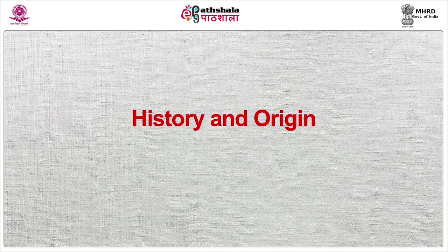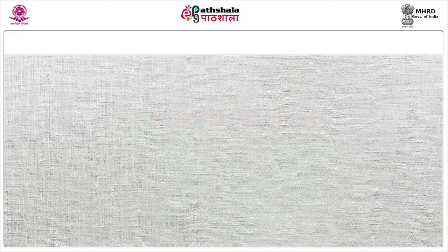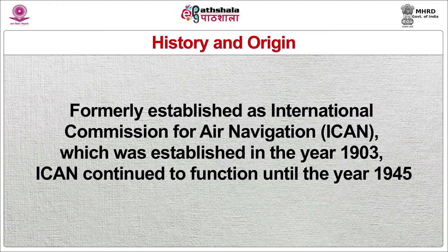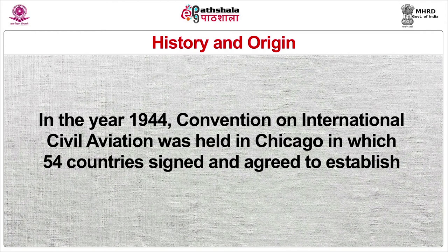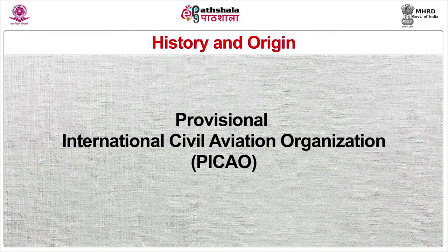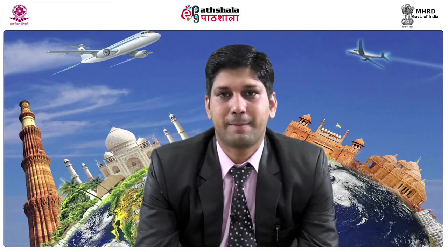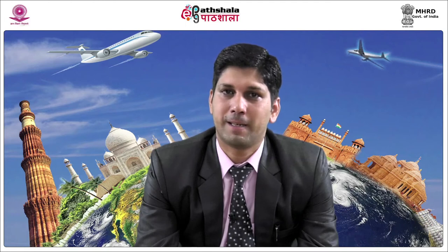Let us now discuss the history and origin of ICAO. Formerly established as the International Commission for Air Navigation (ICAN) in 1903, ICAN continued to function until 1945. In 1944, the Convention on International Civil Aviation was held in Chicago, in which 54 countries signed and agreed to establish the Provisional International Civil Aviation Organization (PICAO). PICAO began operating on 6 June 1945, replacing ICAN. In 1947, ICAO became a permanent agency of the United Nations.